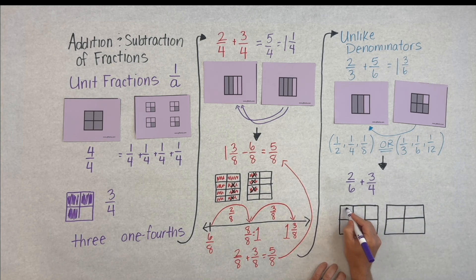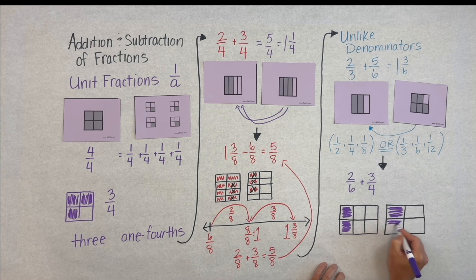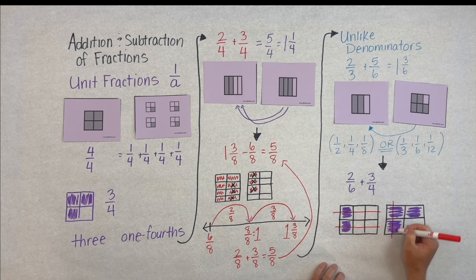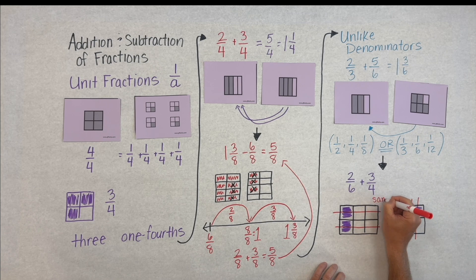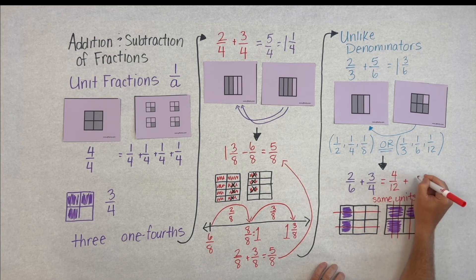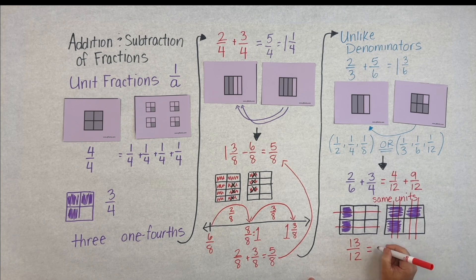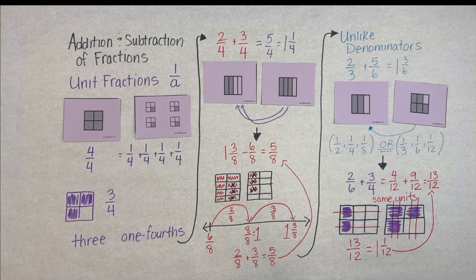So here we'll go ahead and model two-sixths and model three-fourths, and we know now that these are not friendly so we need to make them the same size units. So we'll go ahead and change these into twelfths. And our two-sixths is equivalent to four-twelfths and our three-fourths is equivalent to nine-twelfths. And if we count those units we'll see that we get thirteen-twelfths which is the same as one and one-twelfth. And there's your need-to-know.